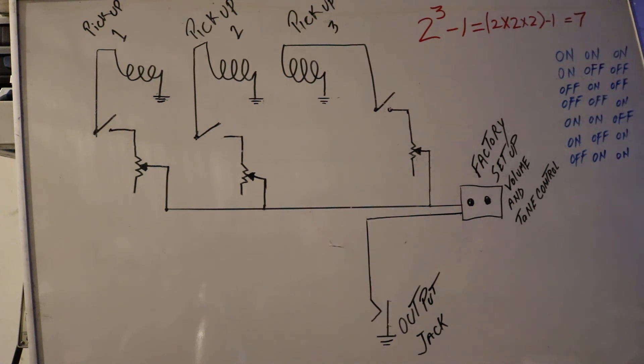So the first combination of the three pickups would be all on. First pickup would be on, the two would be off. Then the first and last would be off, the middle one would be on.